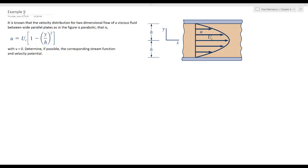Hello, now we solve Example 9. It is known that the velocity distribution for two-dimensional flow of a viscous fluid between wide parallel plates, as in the figure,